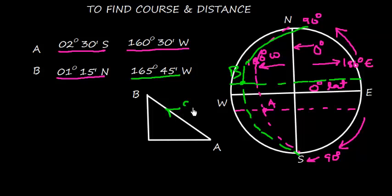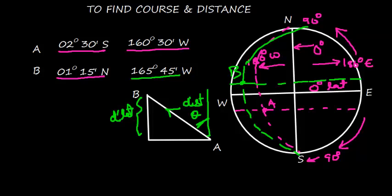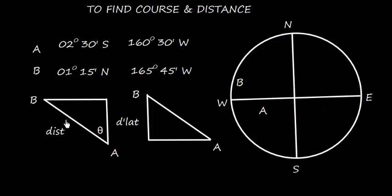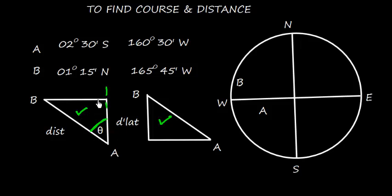So we have these two points A and B. The distance AB is what we need to find, and this angle is the course. We can make a triangle where the course is measured from the north-south line — this angle from the north-south line is the course, and AB is the distance. Both triangles are similar, however their orientation is changed.